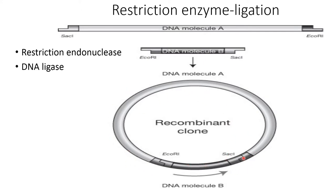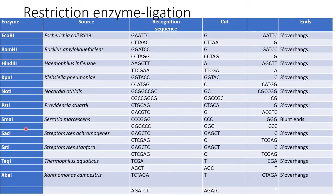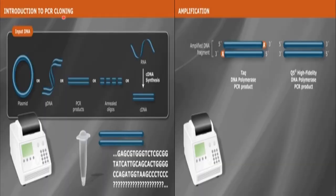This gene of interest is joined into the vector. This is a table listing the restriction enzymes used in the restriction enzyme ligase method for cloning. In the case of PCR cloning, when we amplify the DNA fragment using Taq DNA polymerase, the PCR product will consist of an adenosine nucleotide at the 3' end, whereas with Q5 high-fidelity DNA polymerase, the product will have a blunt end.